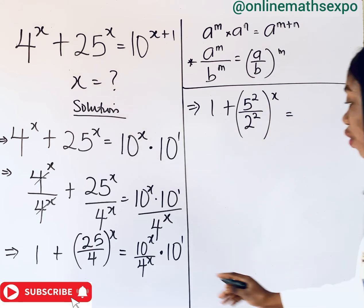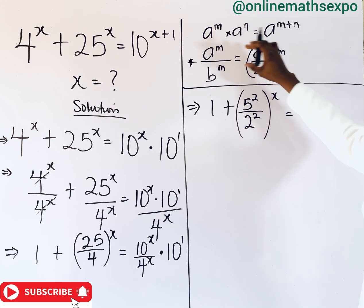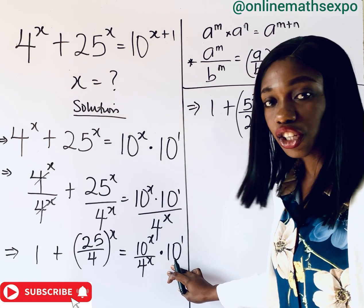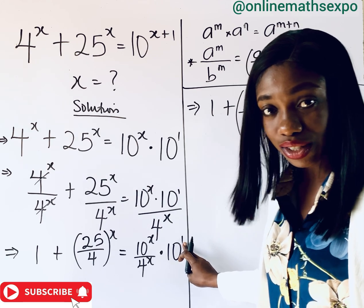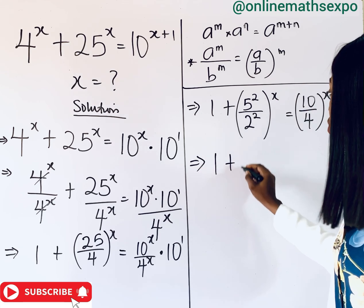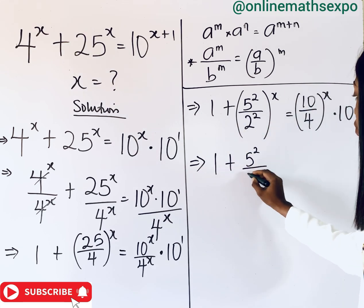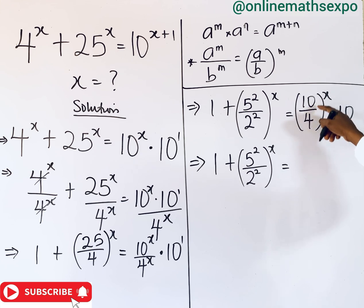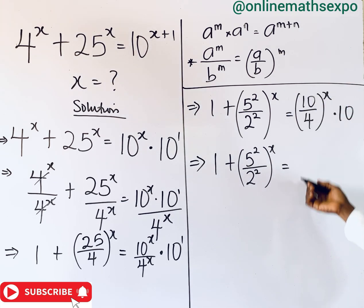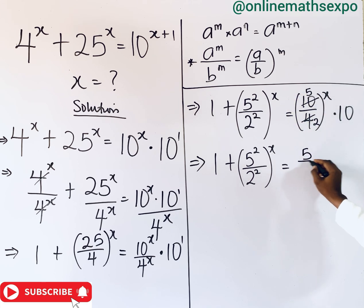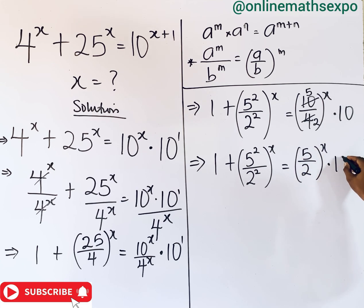So, obeying the same rule, we are going to have 10 over 4 raised to the power of x, and note that any time you raise a number to the power of 1 it gives you back that number, so 10 to the power of 1 is still 10. Now we have 1 plus 5 to the power of 2 over 2 to the power of 2, raised to the power of x. You notice that 2 can divide 10 to give us 5, and 2 can divide 4 to give us 2. So we are having 5 over 2 raised to the power of x, multiplied by 10.